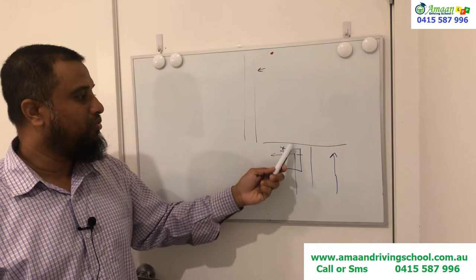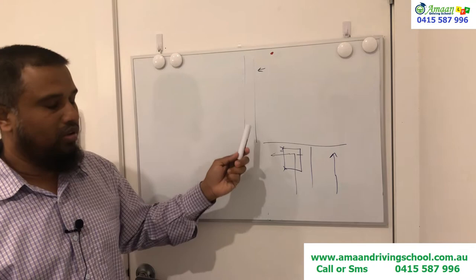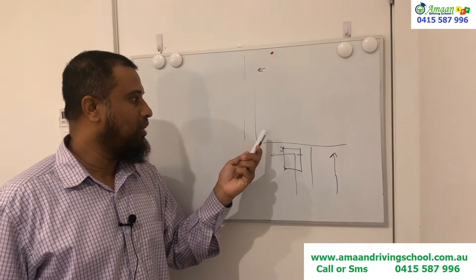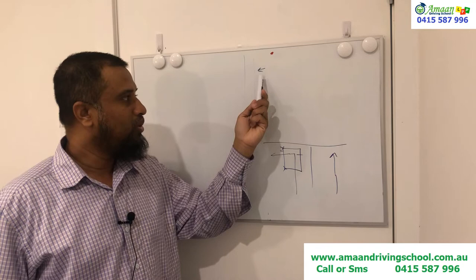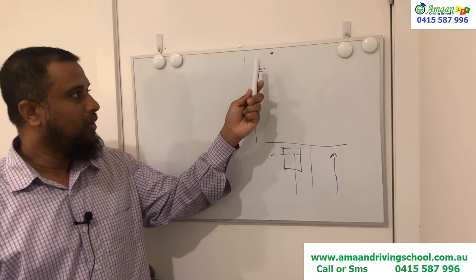A left green arrow means it's a free left. Usually when you get this green arrow, the pedestrians will get a red light. If any pedestrian steps in then you have to give way, but usually it's a free left. So when you get an arrow, that means it's a free left and you can turn left easily.